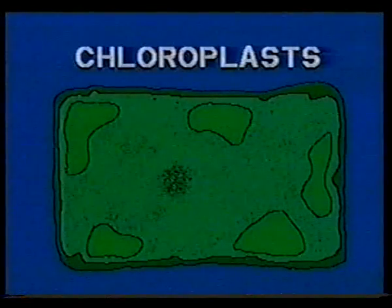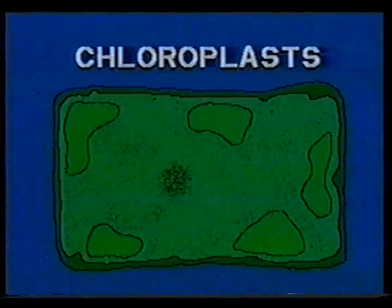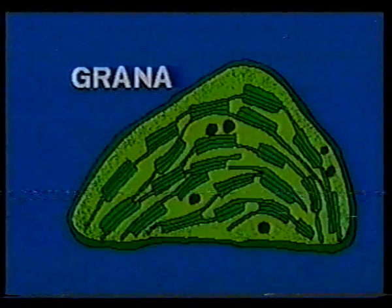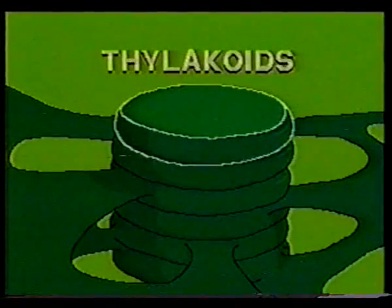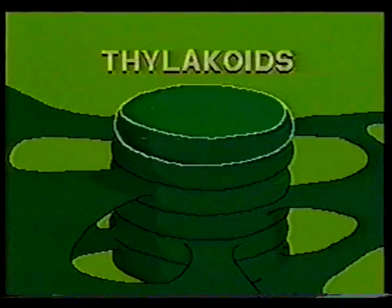Year by year, scientists probe deeper and deeper into the plant leaf to unravel the mystery of photosynthesis. Not all plant cells contain chlorophyll. Those which do have chloroplasts, in which chlorophyll is found. Each chloroplast is actually a series of stacks of grana, which are flattened sacks. Within the individual sacks, called thylakoids, an important part of the photosynthesis reaction takes place. This part of the reaction is centered in two distinct complexes of molecules, or photosystems, within each thylakoid, and depends on light.